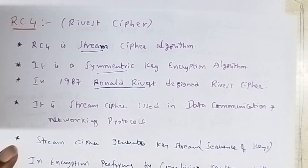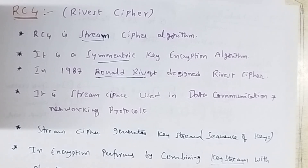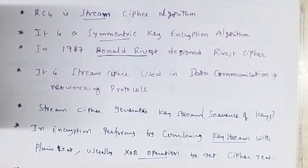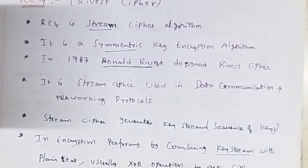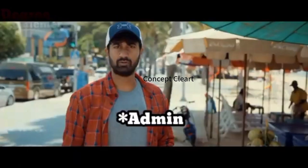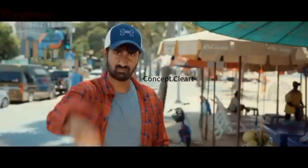This is about the RC4 algorithm. The main things about RC4: it is a symmetric key encryption algorithm, and it is a stream cipher, meaning the given plain text data is divided into a number of sub-streams. These are the key concepts of RC4. If you have any doubts, please ask in the comment section. Thank you everyone. Please subscribe to our YouTube channel, Concept Clear. Please like, share, and subscribe.